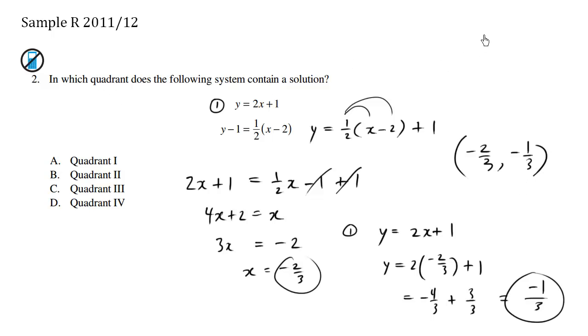If we're talking about the actual quadrants, this here is quadrant 1, 2, 3, and 4. So an x value of negative 2 thirds is going to be going this way, negative. And then a y value of negative 1 thirds is going to go down. So the quadrant is going to be in quadrant 3. Definitely going to be over here somewhere. So the answer here is C.